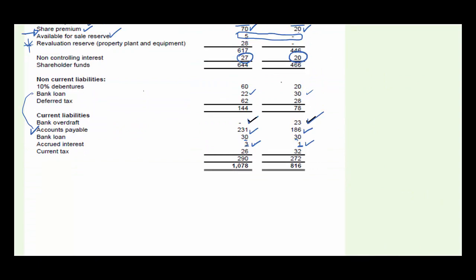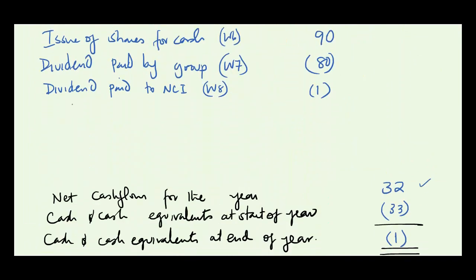Next: debentures. Debentures were 20 at the start and 60 at the end, meaning additional funds were raised. Taken directly to financing activities as 'issue of debentures': 60 − 20 = 40, a positive cash inflow. Bank loan is already factored in. Deferred tax and current tax are yet to be covered — these will help determine actual taxes paid.